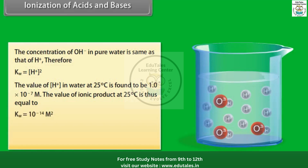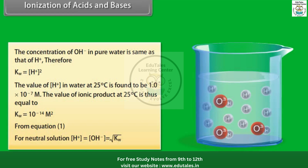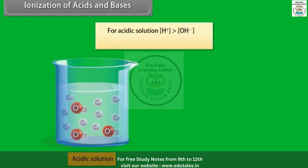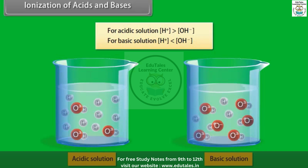For a neutral solution, [H⁺] = [OH⁻] = √Kw. For an acidic solution, [H⁺] > [OH⁻]. For a basic solution, [H⁺] < [OH⁻].